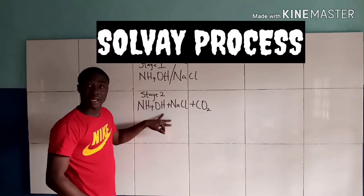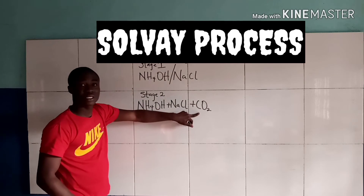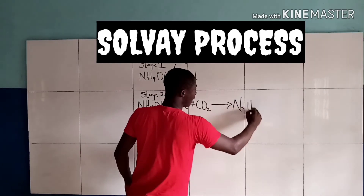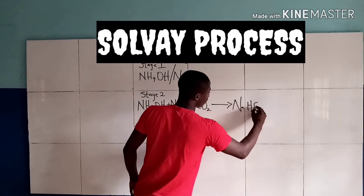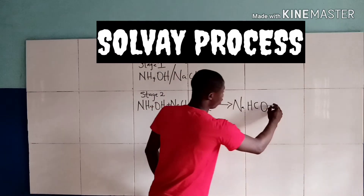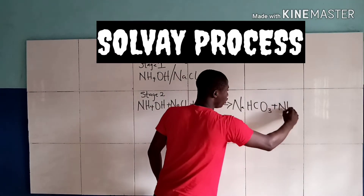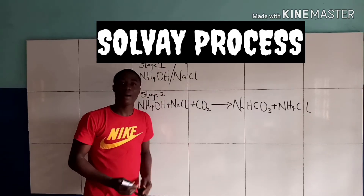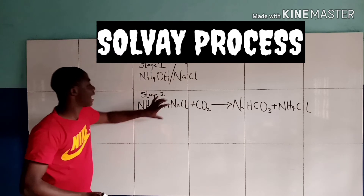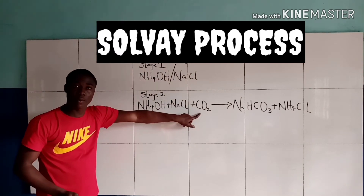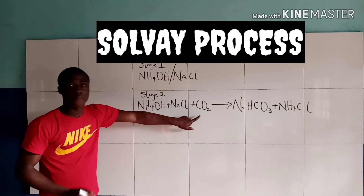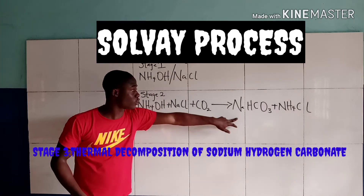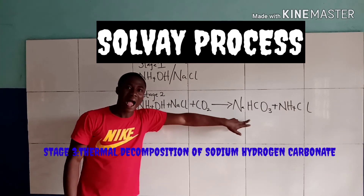When we react ammoniacal brine with carbon dioxide we get sodium hydrogen carbonate. The third stage of the Solvay process is the thermal decomposition of sodium hydrogen carbonate.